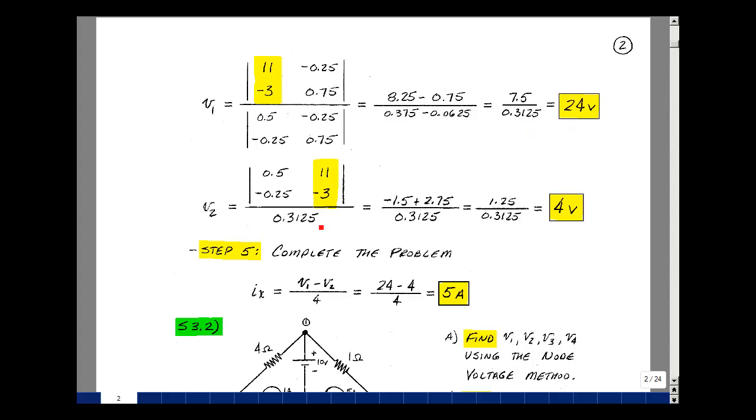To solve for V2, we'll take the same denominator, but we'll put the left-hand side of the equation in the column associated with V2, which is the second column, and do again the determinant. So this times this is a minus 1.5, and then minus the product of these two, which would be a positive 2.75. Now our denominator determinant is still the same, so it's 0.3125, and this difference is 1.25. Then we get 4 volts.